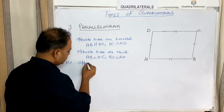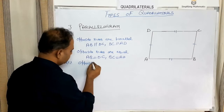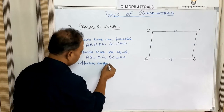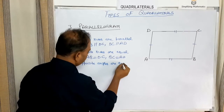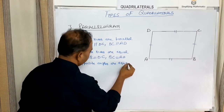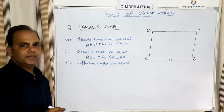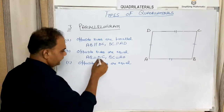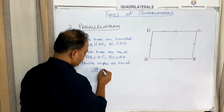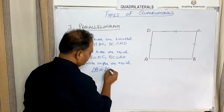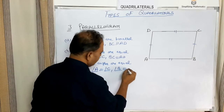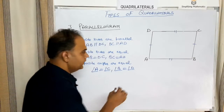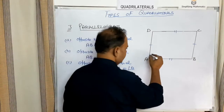The third property is that opposite angles of a parallelogram are equal — angle A equals angle C, and angle B equals angle D.